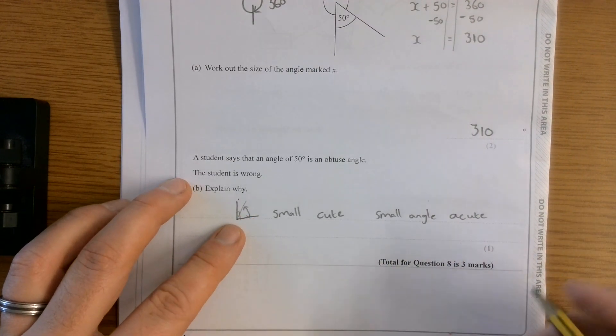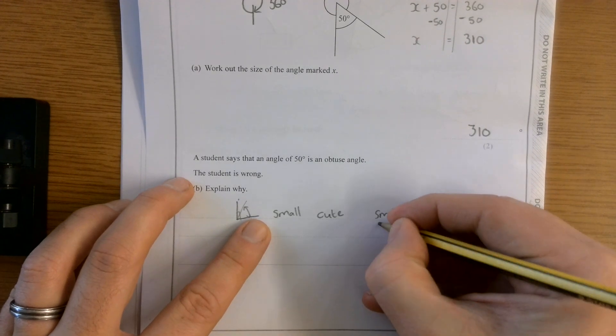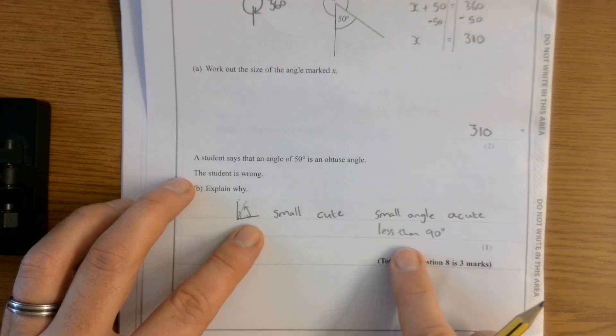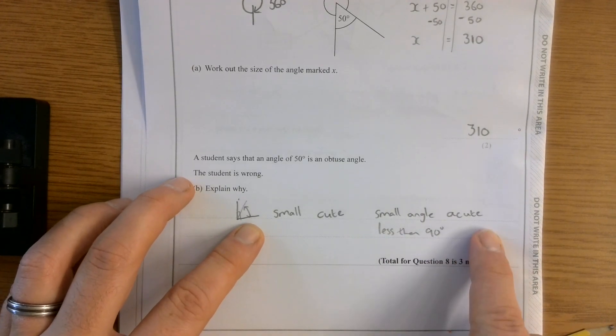So when I think about a small angle, that means less than 90 degrees. So if I've got an angle less than 90 degrees, it is an acute angle.